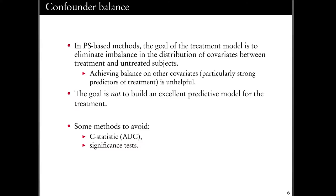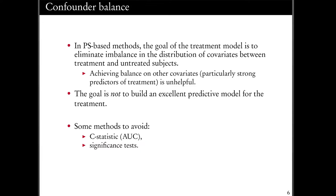Our goal isn't to build an excellent predictive model. With that in mind, we don't want to use things like C-statistics to see if we've got a good treatment model, because that only tells us if we have a good predictive model. Similarly, we don't want to use significance tests to test whether there's a difference between treated and untreated groups for a particular covariate. For example, if I matched strictly, it may not be significant simply because I've reduced my sample size and don't have the power to detect an effect. So tests of significance are not necessarily the way to go to decide whether we've achieved balance.